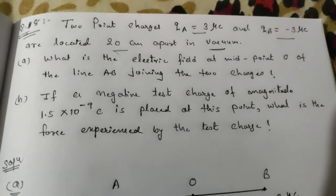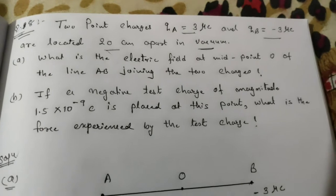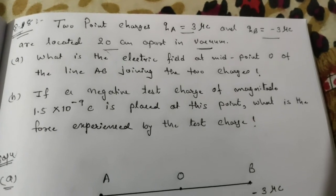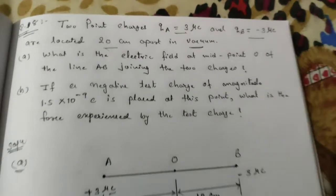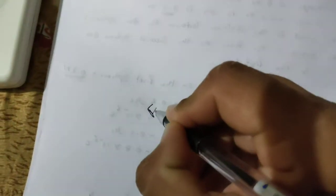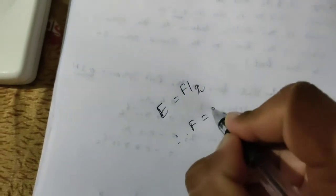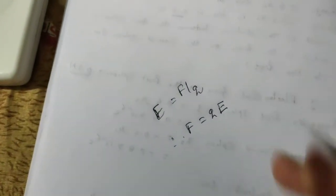Now second question: if a negative test charge of magnitude 1.5 × 10⁻⁹ coulomb is placed at this point, what is the force experienced? The basic equation is electric field equals force per unit charge, so F = QE.